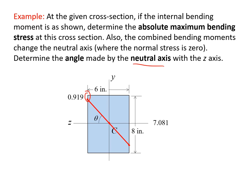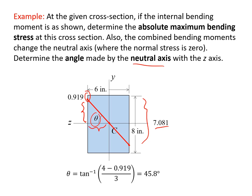This distance is determined to be 0.919 inches, and from here to here is 7.081 inches. The question asks for the angle theta made by the neutral axis with the z-axis. We apply trigonometry: theta equals arctan of this height divided by this length — tangent inverse of (4 minus 0.919), which is this portion, divided by 3, which is half of 6. The answer is 45.8 degrees, and that is the final answer for this problem.